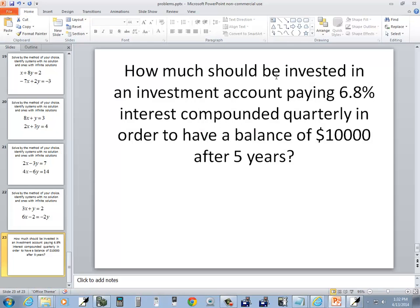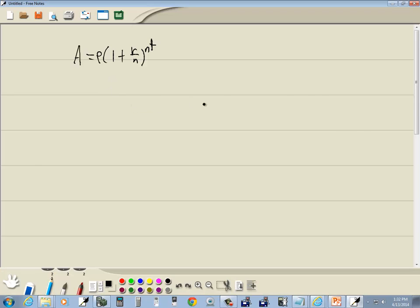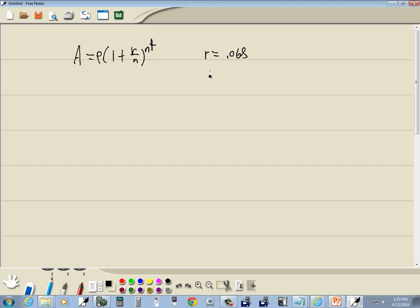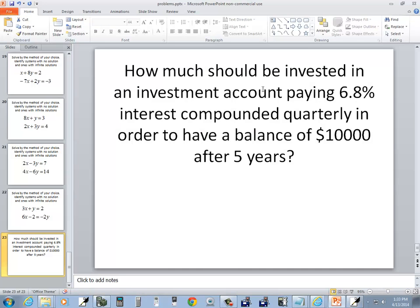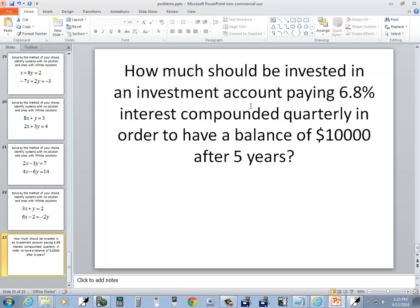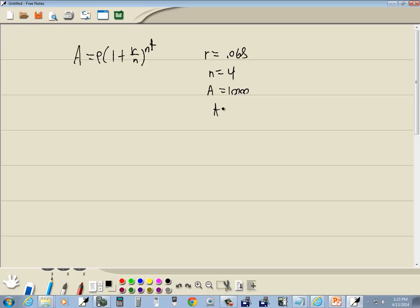Let's see what they give us. How much should be invested paying 6.8%, so R is 6.8%. Compounded quarterly, that means N is 4. In order to have a balance of $10,000, so we want A to be $10,000 after 5 years, so T is 5.